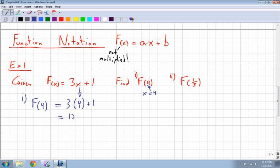And f of 4 means what happens when I plug a 4 into my x. So my x value now becomes a 4. Well, I get 12 plus 1, which is equal to 13. So that means that f of 4 is equal to 13.